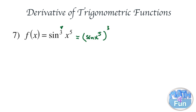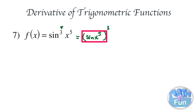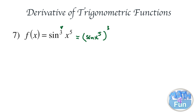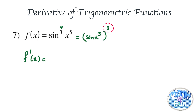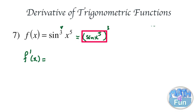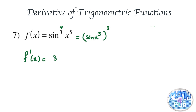Step by step: we have the sine function, x to the power of 5 as a function inside it, and then the whole thing to the power of 3. Starting from the outermost function, we drop down the 3, keep everything inside the bracket as it is, and take away 1 from the power. So we get 3 times bracket sine of x to the power of 5, to the power of 2.